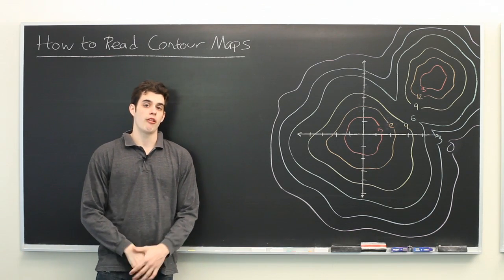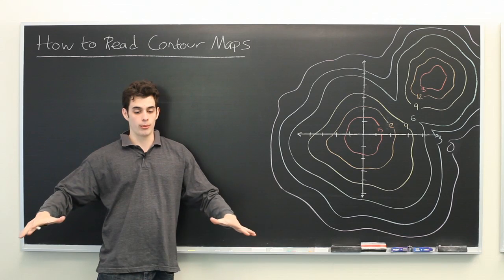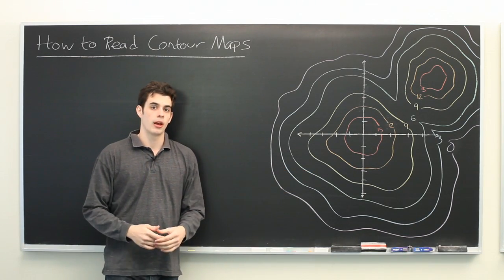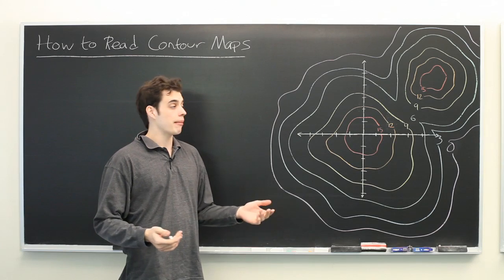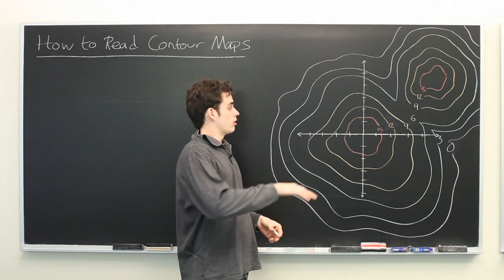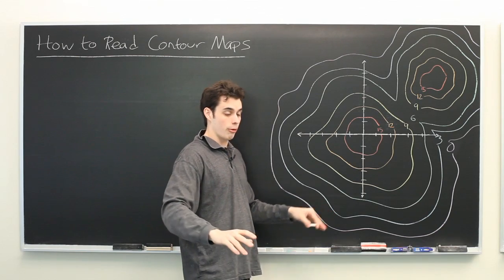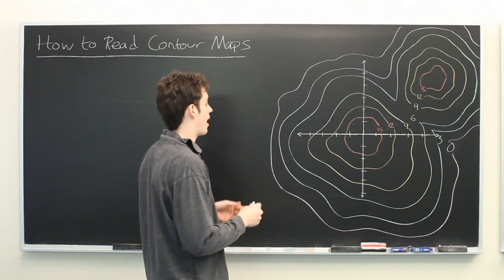A contour map is a method of projecting a three-dimensional object onto a two-dimensional surface. It frequently comes up in topography and map making, such as indicating the height of various points of a hill on a two-dimensional map, which is what we have here.